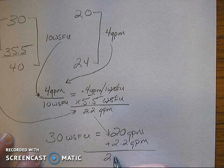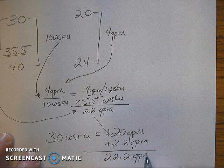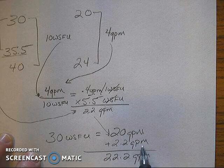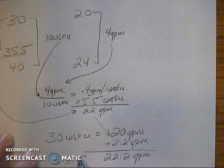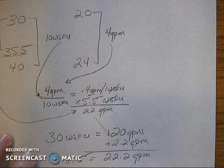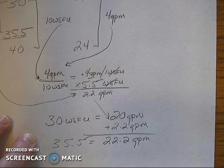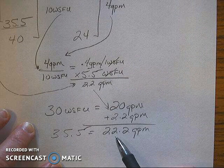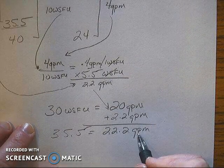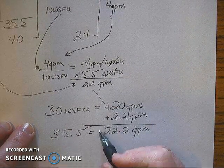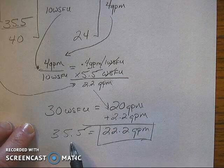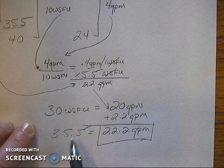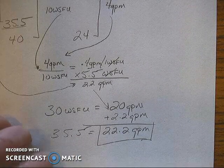And that's going to bring us up to 22.2 GPM. So 35.5 WSFU equals 22.2 GPM. 22.2 GPM is the equivalence of 35.5 flush tank WSFU.